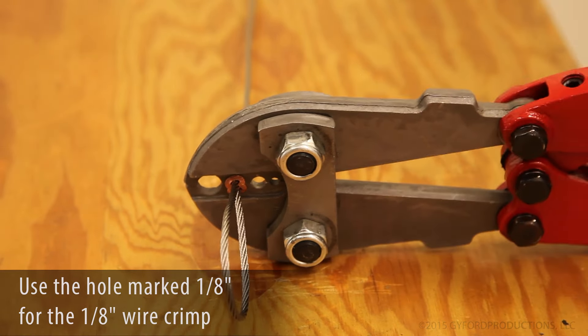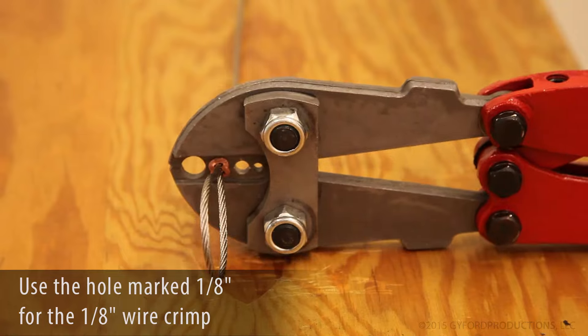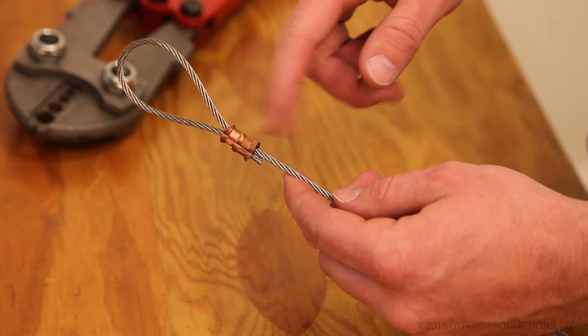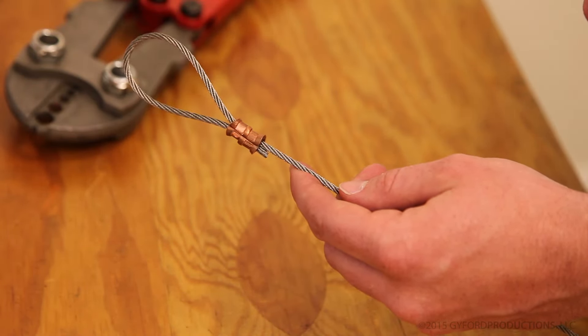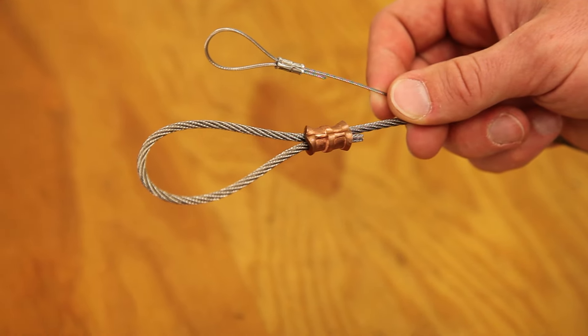Use the hole marked 1/8th for our eighth inch EasyWire 125 with these. Crimp once near the top, then again near the bottom, and now you have a fixed loop at the end of a wire.